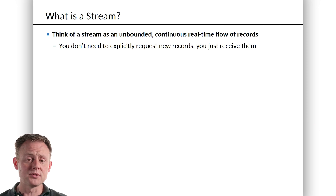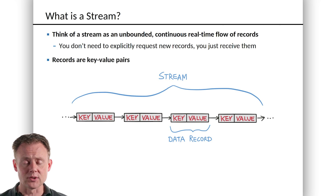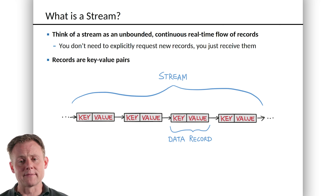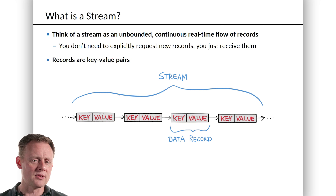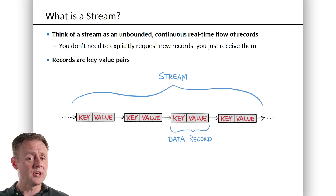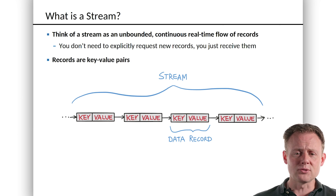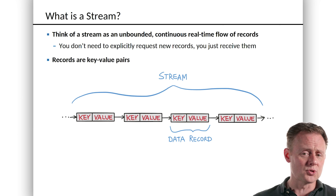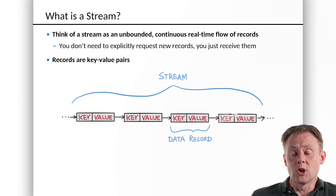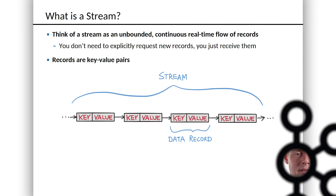Those records themselves are structured as key-value pairs. Now, as you may know, inside Kafka those are untyped byte arrays — they can be whatever you want. But from the standpoint of the API that we're going to look at, those are very much typed things. So you might have a stream whose key is, say, a string and the value is a long, maybe a count of something like that. So the message is a key and a value, and as we dig deeper into these, we'll see that there is a type system that helps us keep our messages straight.